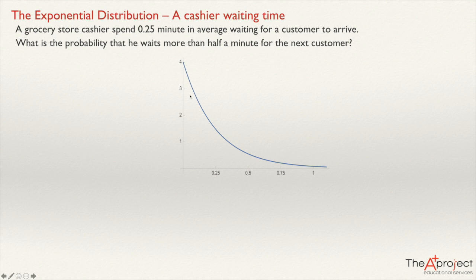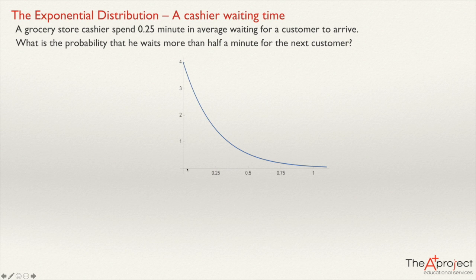Remember that below the probability density function you have the histogram — the rectangles of the histograms lie below this curve — and this curve is formed by joining together all the tops of the rectangles. Because there are many values after the mean but the range before the mean is not so long (since waiting times cannot be negative), the rectangles below the mean will be taller to compensate the wide range on the other side.